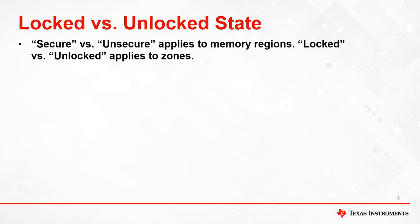Before detailing how to lock or unlock a device, let's establish the difference between the terms locked and secure. The terms secure and unsecure apply to specific memory regions. For example, RAM block LS0 can be secured by Zone 2 while Flash Sector 0 can be secured by Zone 1. Alternatively, a memory region can be unsecure if it is not secured by either zone.